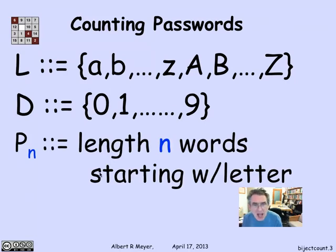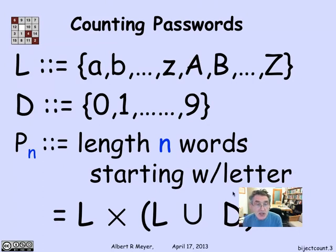Passwords are supposed to be between six and eight words long, but it's a little bit easier to just use length as a parameter. So let's think about words of length n that satisfy the password conditions. P_n is going to be the length n words starting with a letter.